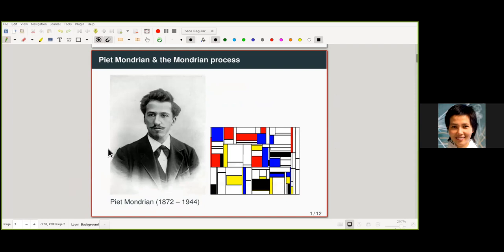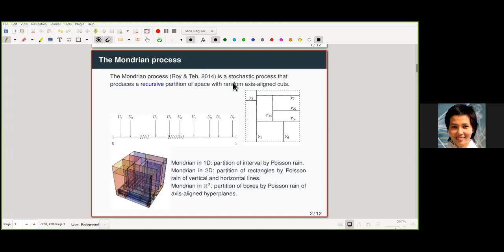So this is Pete Mondrian, the Dutch painter who later moved to New York and was very known for his style of this primary kind of composition with boxes and re-colors. This figure here was not created by Mondrian, the painter, but it was created by a computer using the Mondrian process. So what's the Mondrian process? It was proposed in machine learning by Roy and Tay 2014. It's a stochastic process that produces a recursive partition of space using random axis aligned cuts.